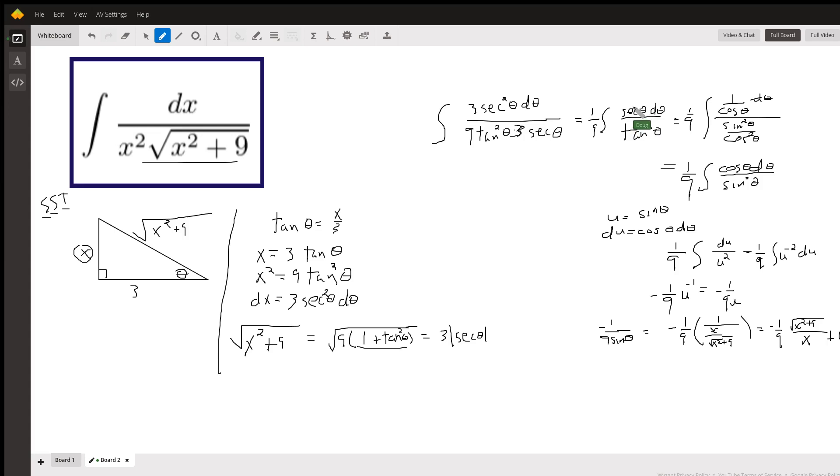Probably easiest to convert to sines and cosines. Secant 1 over cosine. Tangent sine squared over cosine squared. Simplifying that to cosine over sine squared.